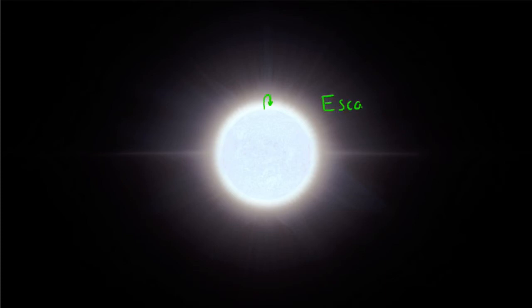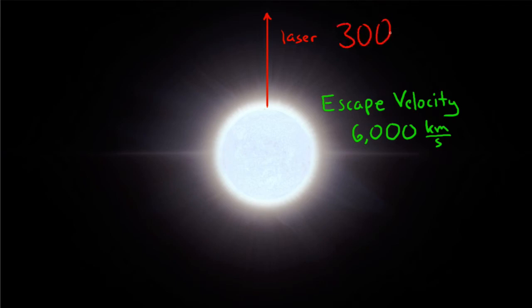Well, escape velocity from a white dwarf would be about 6,000 kilometers per second. So forget about throwing the rock upward. Would light from a laser beam escape? Sure. 6,000 kilometers per second is still way less than 300,000 kilometers per second.